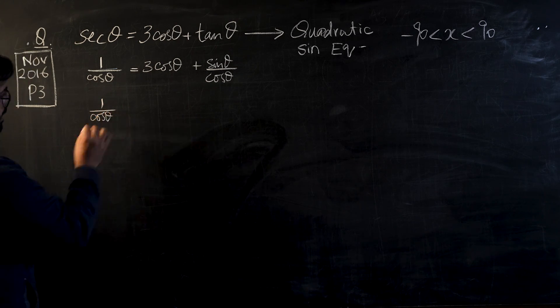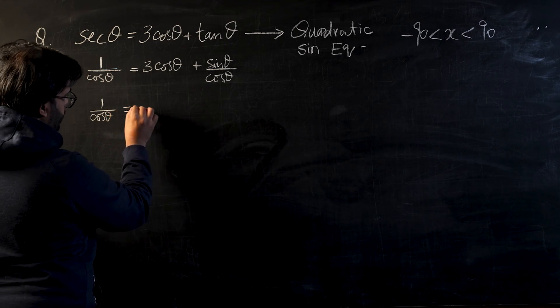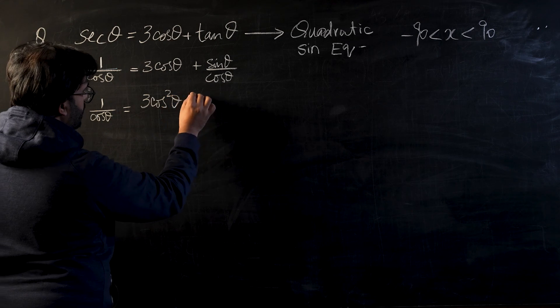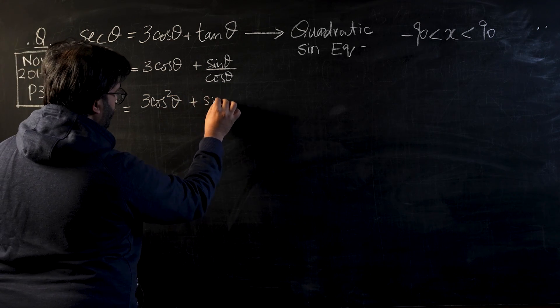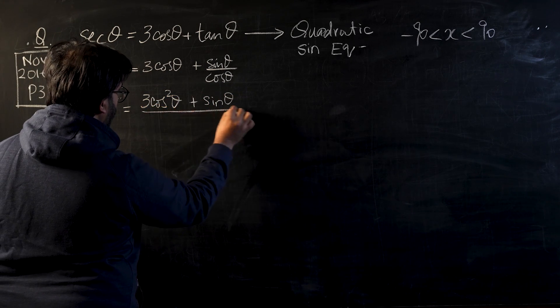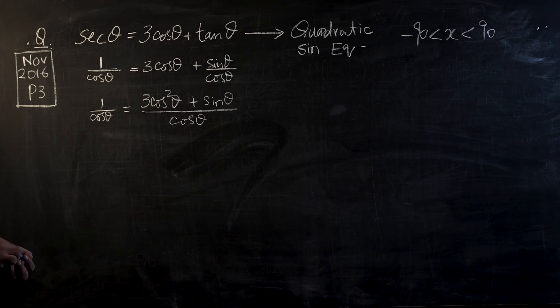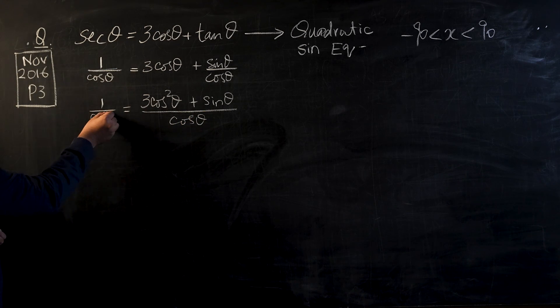Now we can take LCM on both sides. So this will be 1/cos θ or you can multiply the entire equation by cos theta, which would be equal to 3 cos² θ plus sin θ over cos θ.